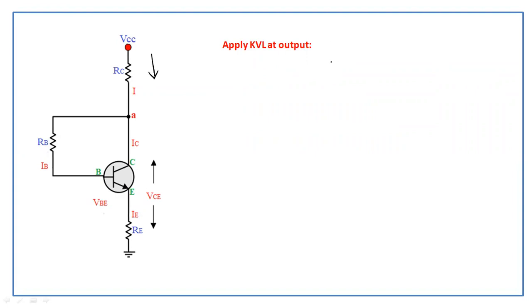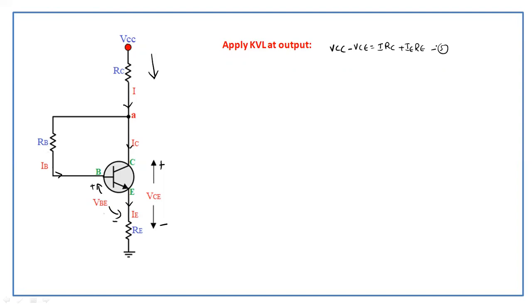Applying KVL at the output side, with I, IC, IB, and IE currents and VBE identified with plus and minus terminals, we get: VCC − VCE = I·RC + IE·RE. There are two voltage drops: I·RC and IE·RE. This is equation number five.